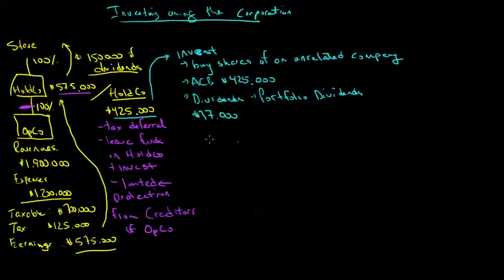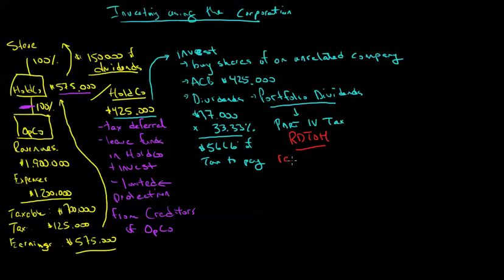Paid to holdco. So these dividends are paid directly to holdco. Now this is a little bit complicated, but what's going to happen here is these dividends are going to be taxed at a rate of 33.33%. So we're going to have $5,666 of tax to pay.